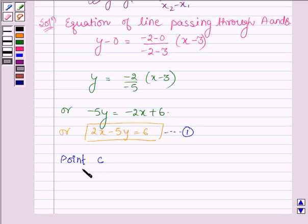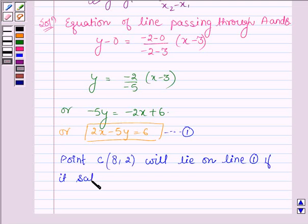Now Point C which is (8,2) will lie on line 1 if it satisfies